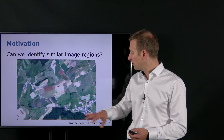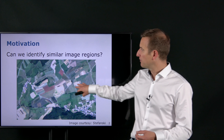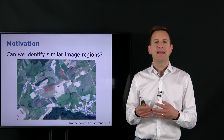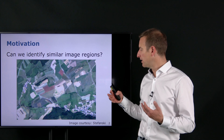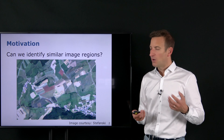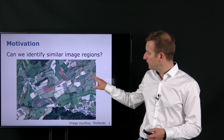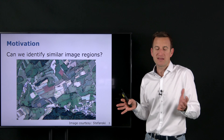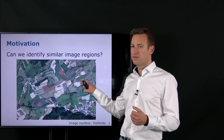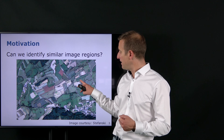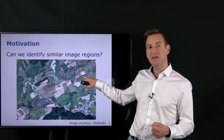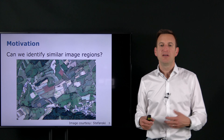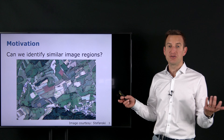Consider you have an aerial image of some landscape — these are agricultural fields in this example. The question is how can we actually identify similar regions just based on this image, without providing any additional background information or training data on how such an image should be segmented. Just by saying we want to group similar things together. We can break down the image content into similar regions — this is a field of type A, this is a field of type B, there's a field type C, this may be a road — and add different types of information to these individual regions.